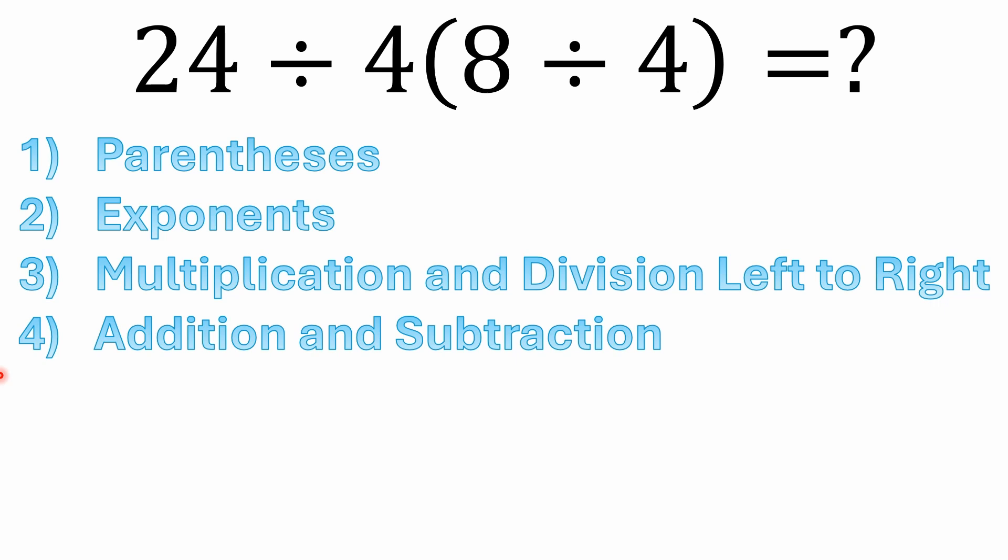The big thing that a lot of people forget is that multiplication and division have equal precedence, and they're just solved left to right. And then addition and subtraction are also equal precedence. It doesn't really matter which order you solve them, you get the same answer with addition and subtraction. Subtraction is just adding a negative number.